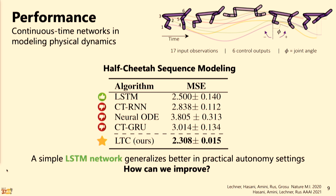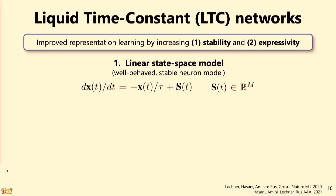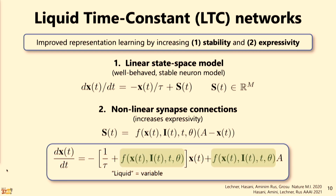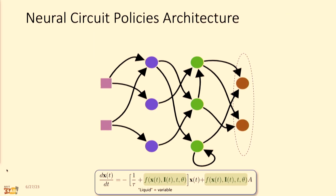We achieve better performance with two mathematical innovations. First, we change the equation that defines the activity of the neuron. We start with a linear state-space model, then introduce nonlinearities over the synaptic connections, and when we plug these two equations into each other, we end up with a new equation. What's interesting is that the time constant in front of x(t) is actually dependent on x(t), which allows the neural network solutions to change their underlying equations based on the input they see after training. We also change the wiring architecture of the network.